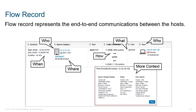Those are some of the unique things about StealthWatch and our flow collectors. When we look at the flow records, it is going to see the whole end-to-end communication — who started the session, when did it happen, where was the traffic originating from, how big was it, what type of traffic were they using, and of course the source and the destination.